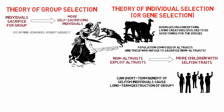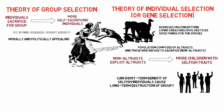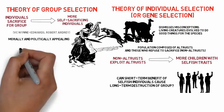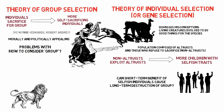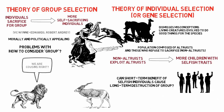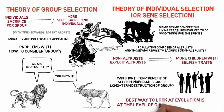However, group extinction is a slow process and the selfish individual would still prosper in the short term at the expense of the altruist. Group selection theory may be appealing based on moral and political ideas, but there are problems — such as at what level of the group should we consider? Should lions and antelopes refrain from killing each other because they are both mammals? Dawkins argues that the best way to look at evolution is to start at the level of the genes and their self-interest.